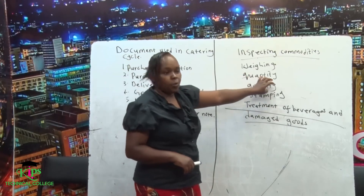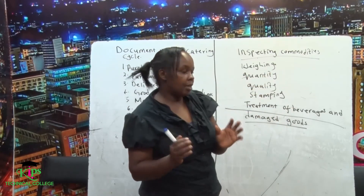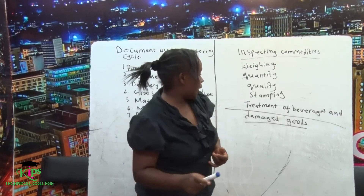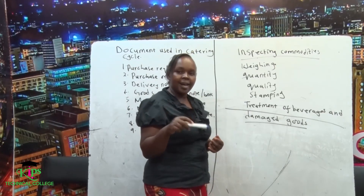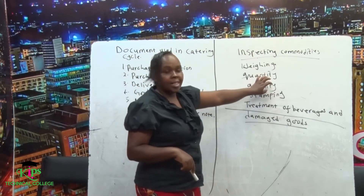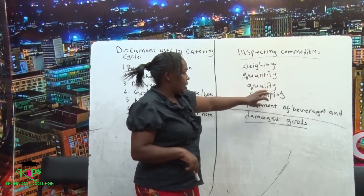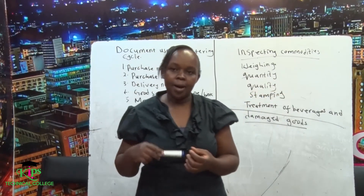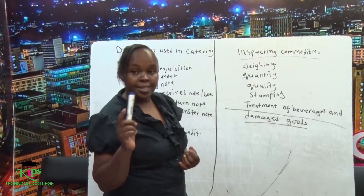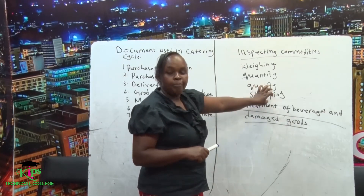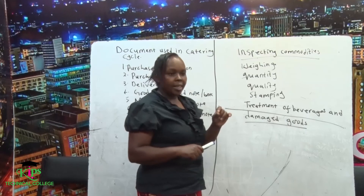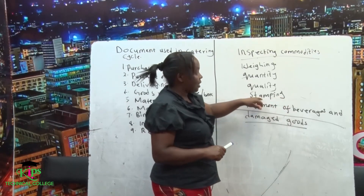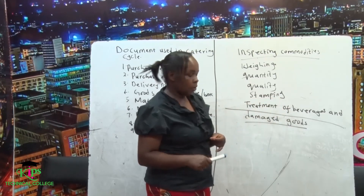Another thing you look at is the quality. When we are talking about quality, you look at the quality of the goods. Stamping: this comes when there is meat. Meat, before it is sold, has to be stamped to show it is not harmful to human consumption. The meat has to be stamped by an authorized doctor.